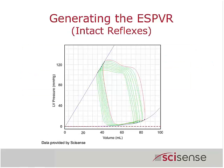The end-systolic pressure-volume relationship, the ESPVR, has a slope that has been variously described as E-sub-ES for end-systolic elastance. Originally that was the same as E-max. Initially, Suga and Sagawa, when they were developing all this, equated the E-max with the E-sub-ES — the maximal ventricular elastance.